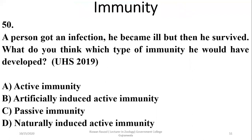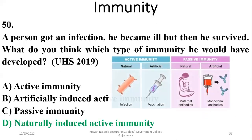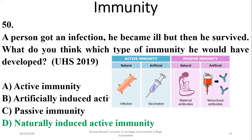Question 50: A person got a natural infection, became ill, but then survived. The type of immunity developed is active immunity — more specifically, naturally induced and naturally produced. Active and natural immunity is the better description. If a vaccine is given it is artificial active immunity; passive immunity is obtained via antibodies directly or from the mother. The right option is delta.